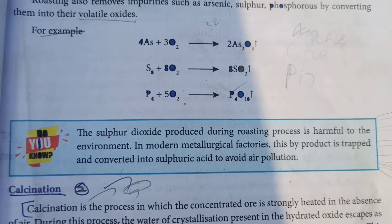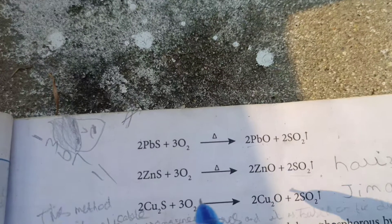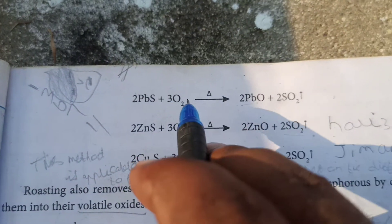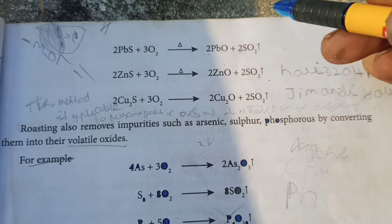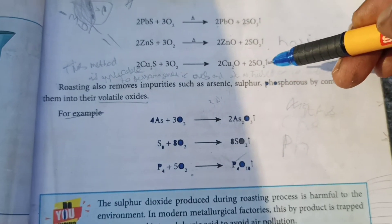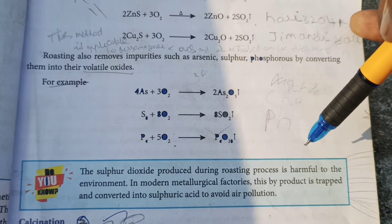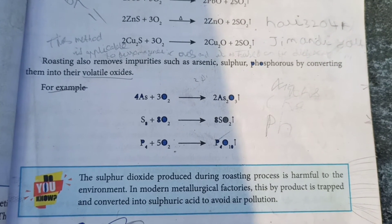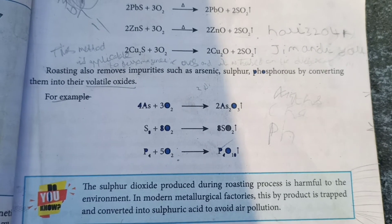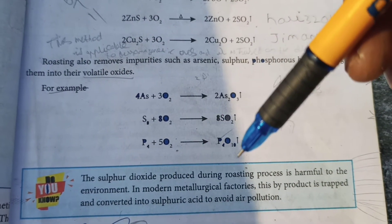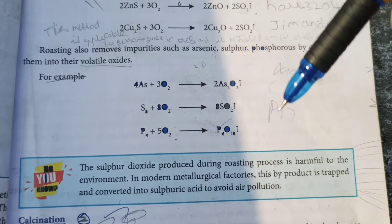The sulfur dioxide produced during the roasting process is harmful to the environment. When metal sulfide reacts with oxygen, it gives metal oxide plus sulfur dioxide. So the gas released is sulfur dioxide. In modern metallurgical factories, this product is trapped and converted into sulfuric acid to avoid air pollution.